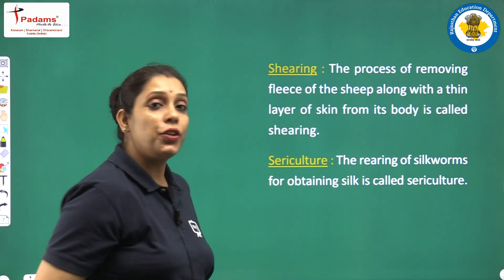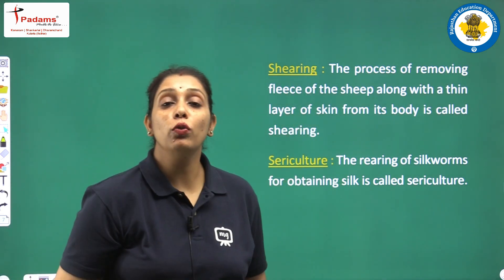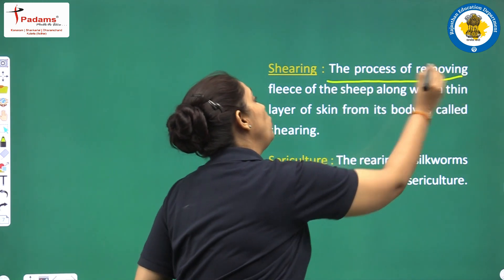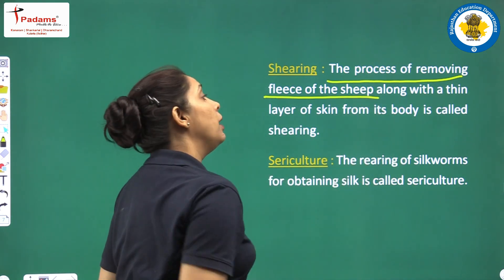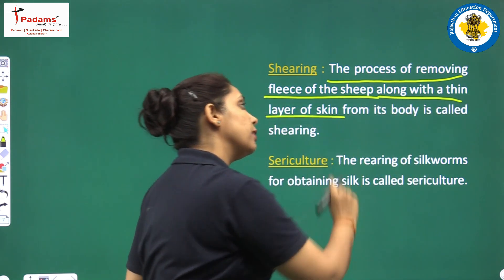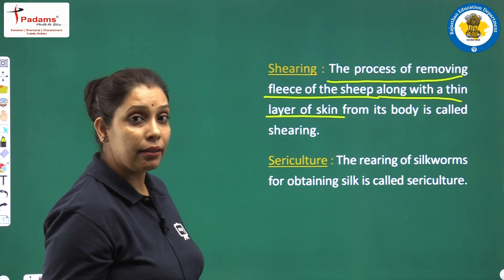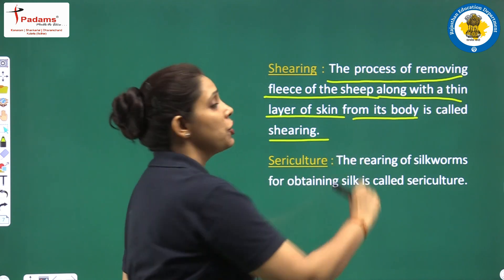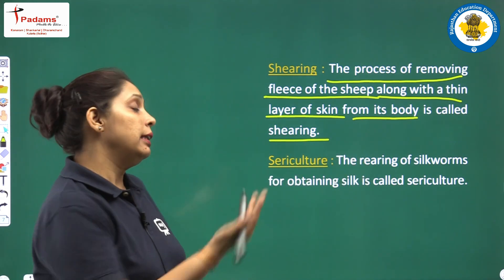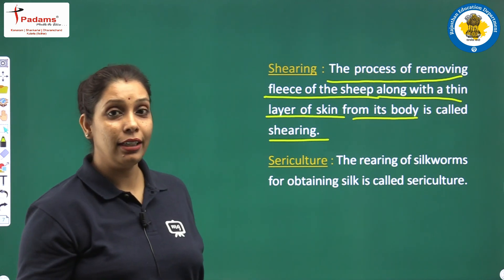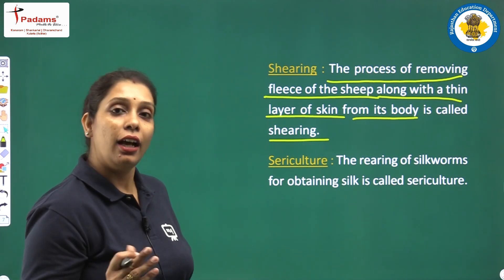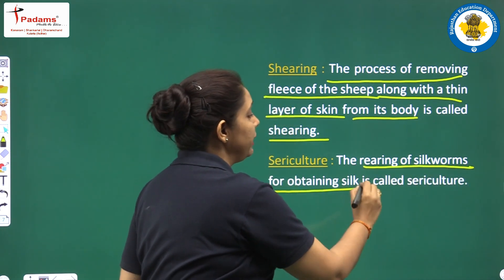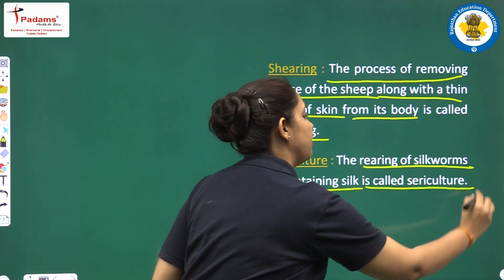Next, shearing. The process of removing the fleece of the sheep along with a thin layer of skin from its body is called shearing. That is an important line — along with a thin layer of skin. Third term is sericulture. The rearing of silkworms for obtaining silk is called sericulture.